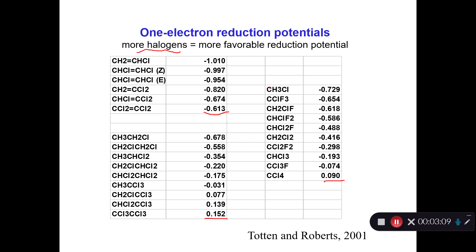This is a range with redox potentials increasing as you go down the column, and therefore the number of halogens. Here we've got chloromethane with only one chlorine, and then we have dichloromethane, trichloromethane, and carbon tetrachloride. The redox potential gets more favorable when you increase the number of chlorines. Same thing for the chlorinated ethylenes and the chlorinated ethanes. In all cases, the redox potential gets more favorable as you increase the number of halogens on the molecule.